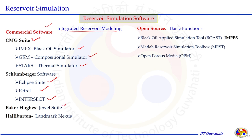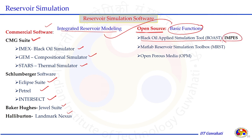Baker Hughes has software called the JewelSuite, and Halliburton has the Landmark Nexus. There are also open-source software tools — free but with basic functions, not integrated reservoir modeling features. Open-source tools can be modified as needed. These include BOST (Black Oil Applied Simulation Tool) based on the IMPS scheme, MRST (a free MATLAB-based tool), and OpenPorousMedia, an open-source code for developing reservoir models and simulating processes.